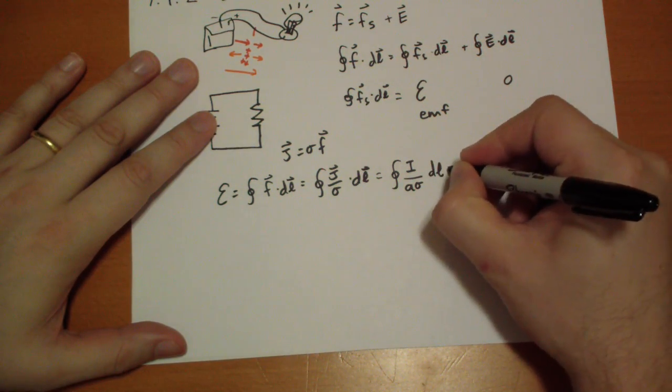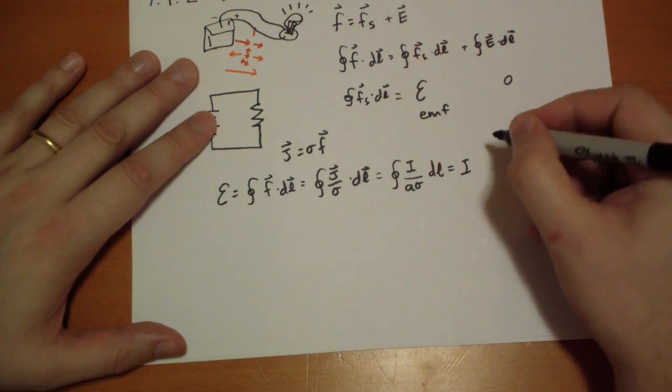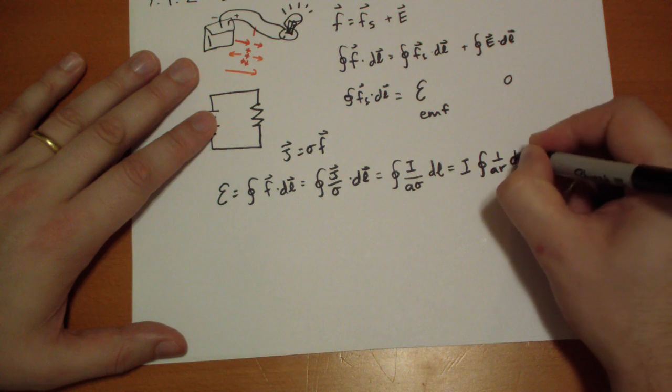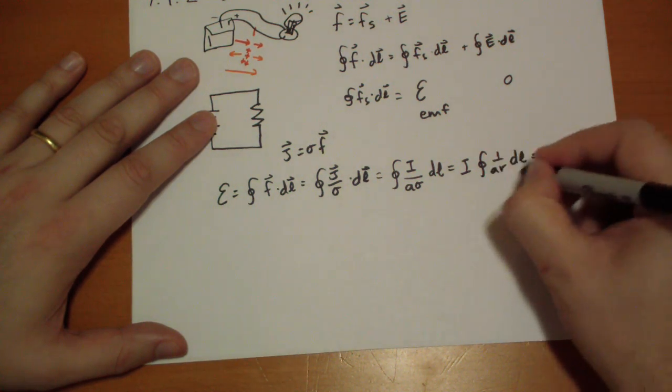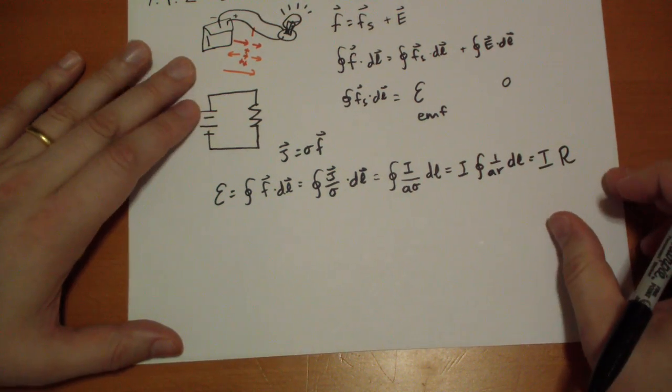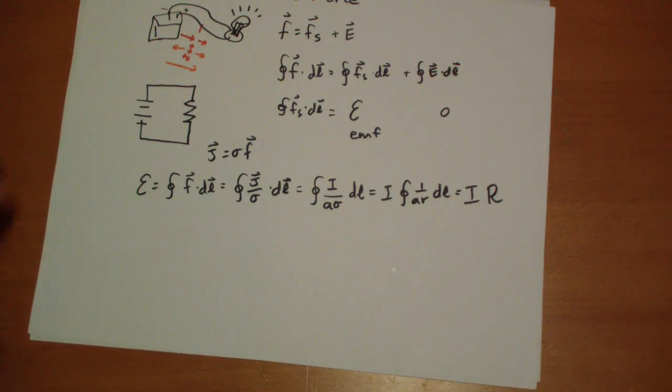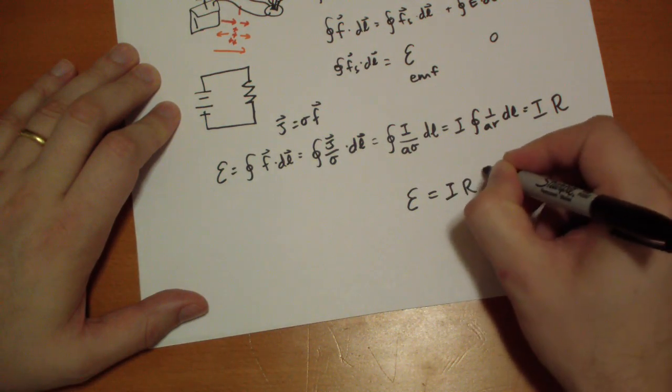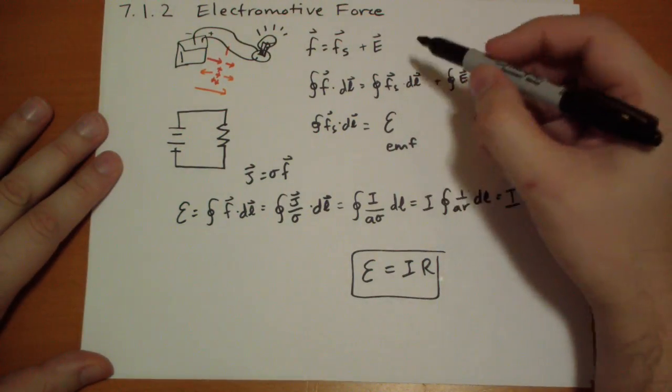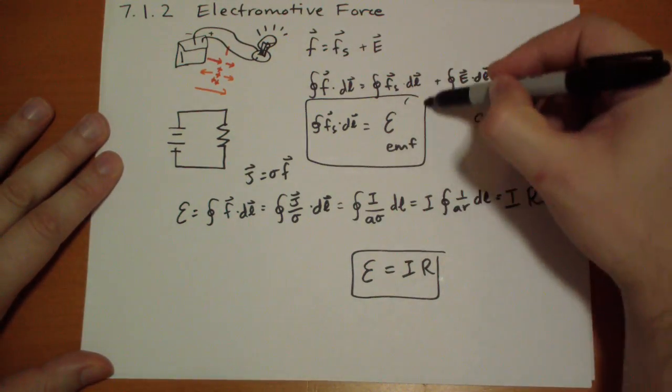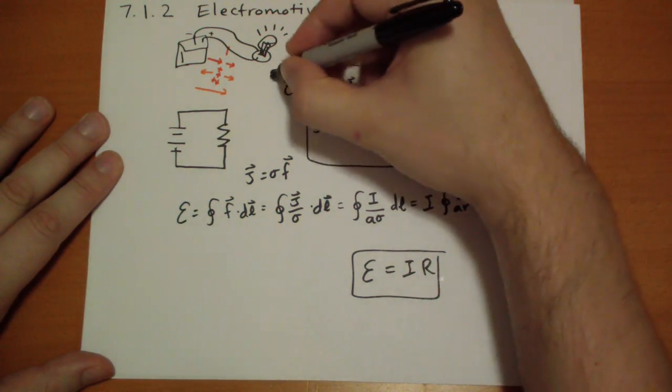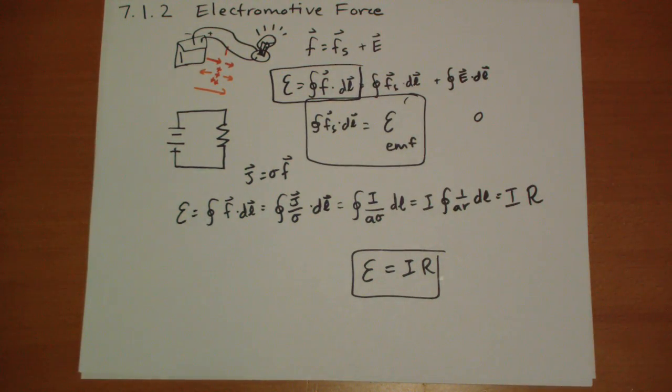Times the length of the circuit. And so we can pull out the I, and then we get one over A sigma DL, and he says this is just the total resistance of the circuit. So we get this equation that the total electromotive force of this circuit is E equals IR. Different circuits will have a different one. But it just ends up, the electric field is going to end up, throughout the loop, the electric field has to cancel to zero.